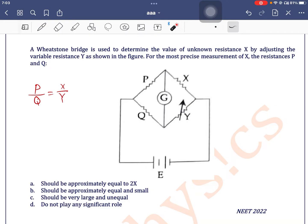Right, we are measuring X here by changing Y. So, if P is equal to Q, suppose if P is equal to Q, then the result will be more accurate.